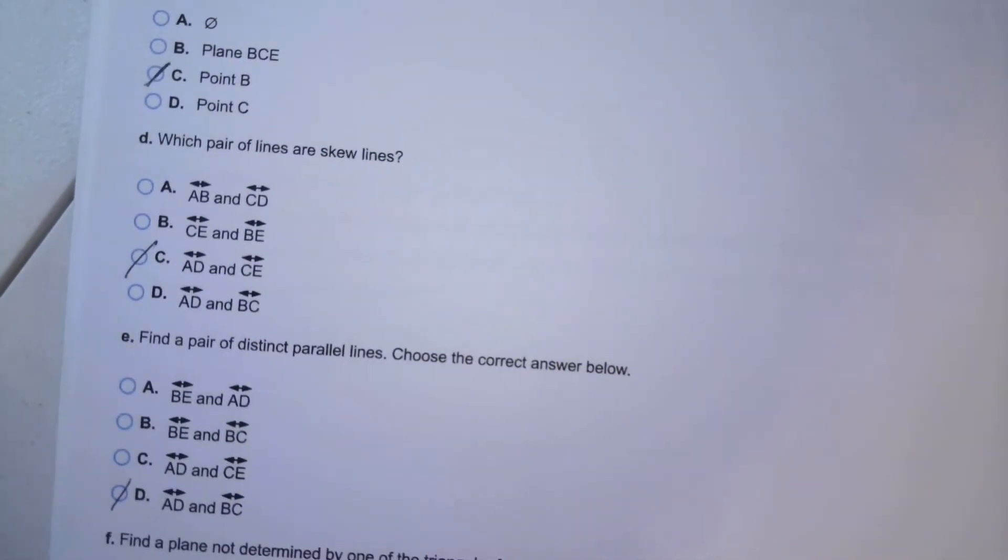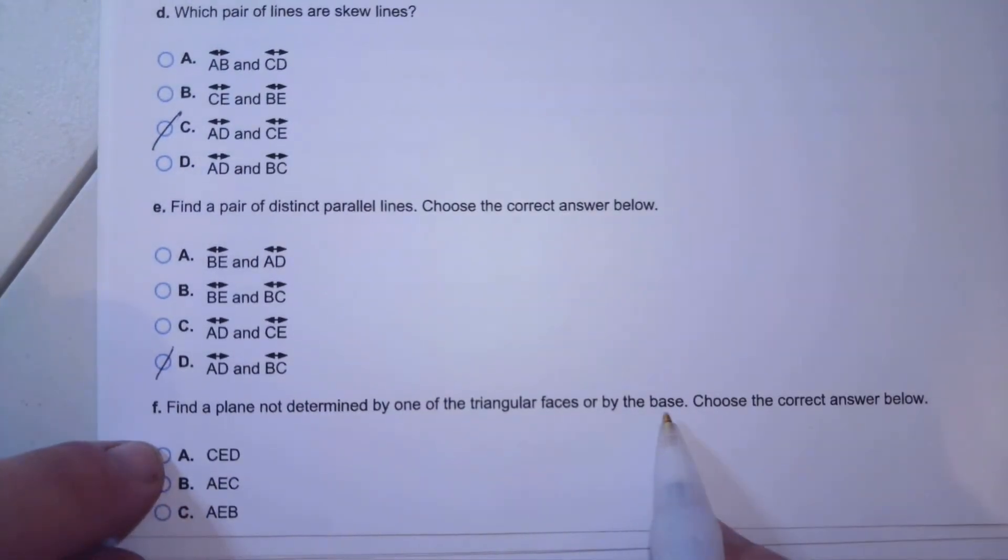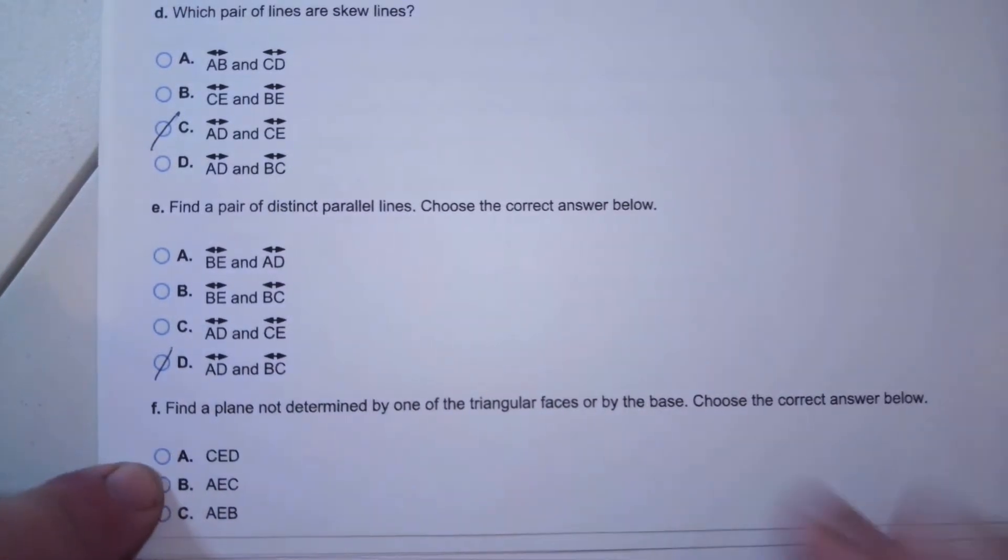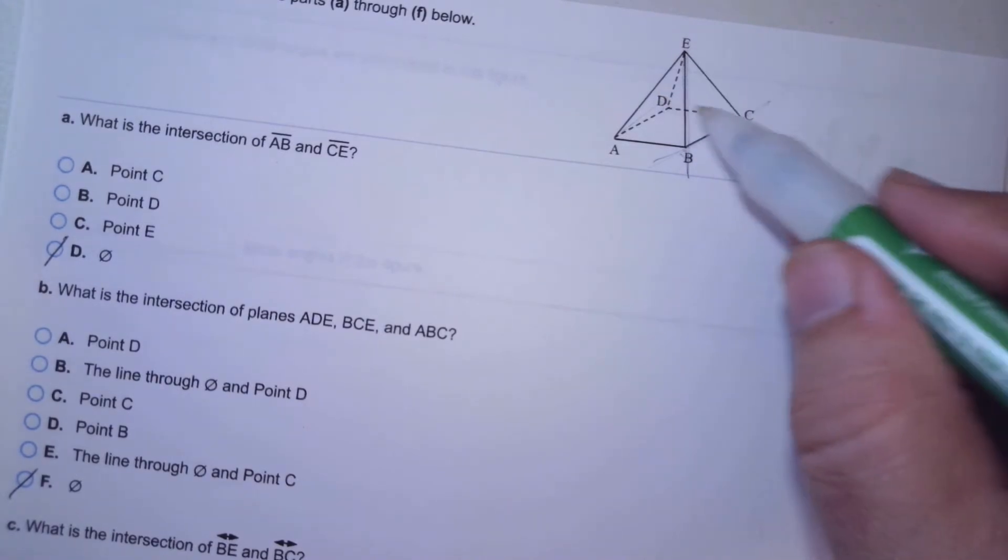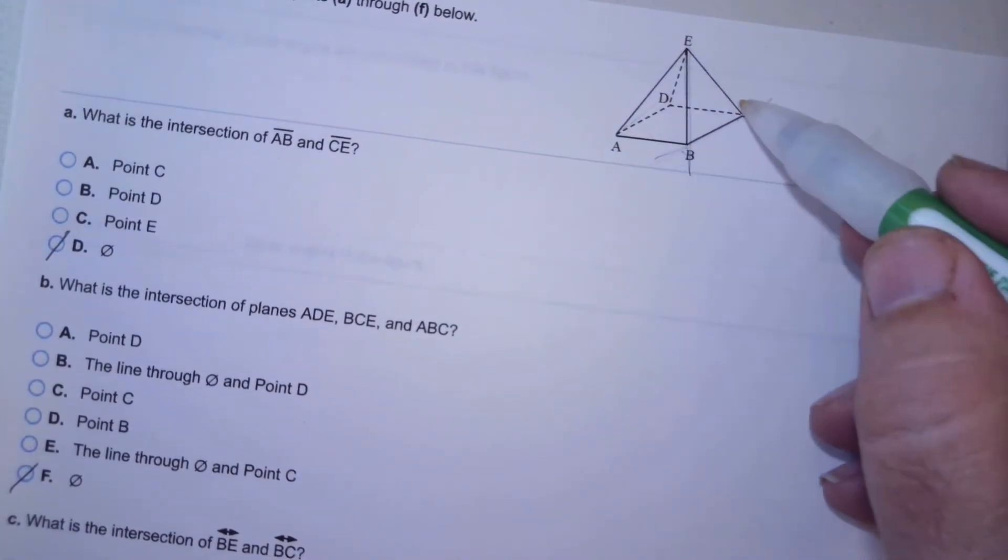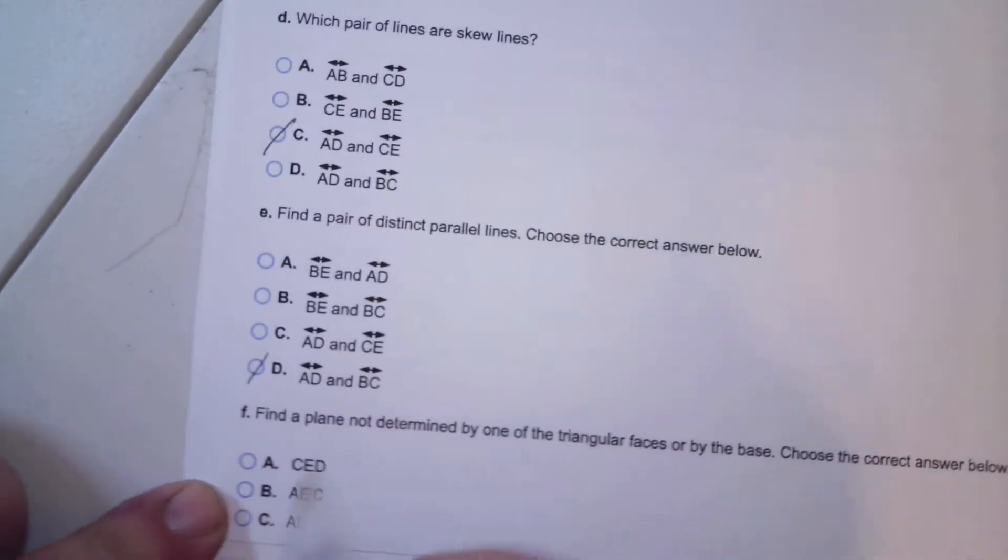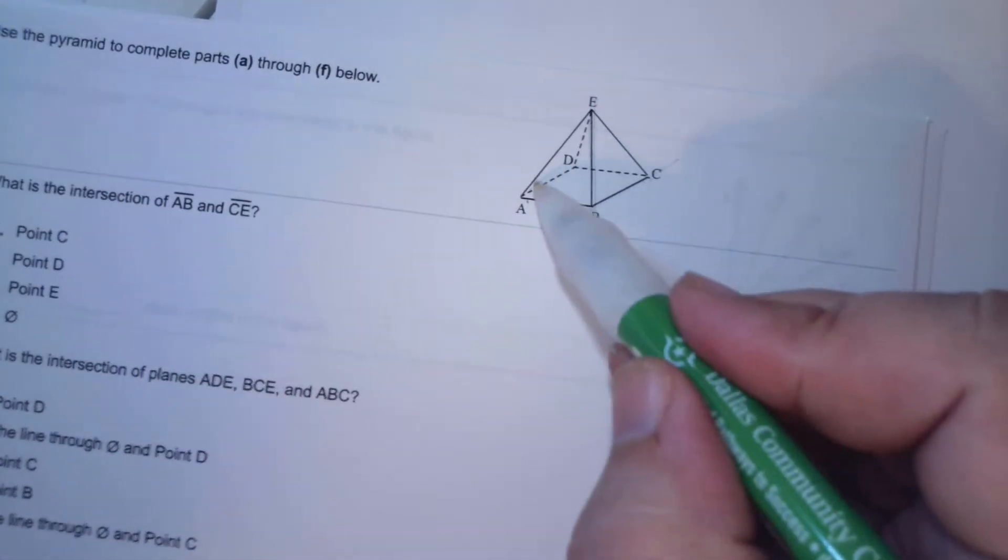Find a plane not determined by one of the triangular faces or by the base. CED is one of the faces already. AEC - that's not defined. So it's AEC because that goes from one corner to the other corner.